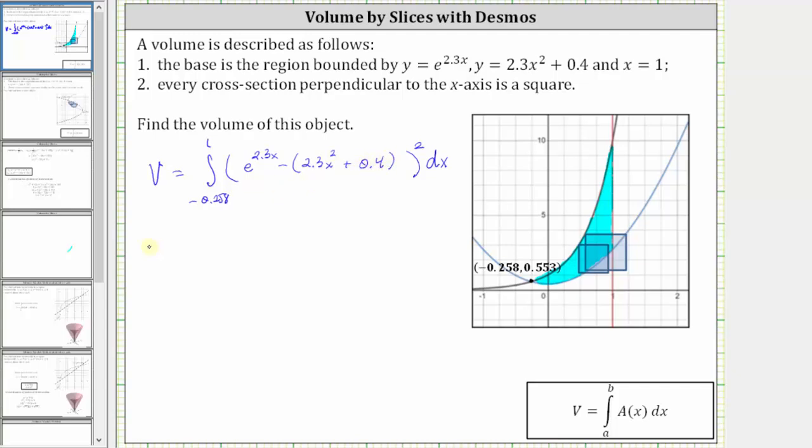Let's go ahead and clear the parentheses. We have the volume is equal to the integral of negative 0.258 to one of the square of e raised to the power of 2.3x minus 2.3x squared minus 0.4.